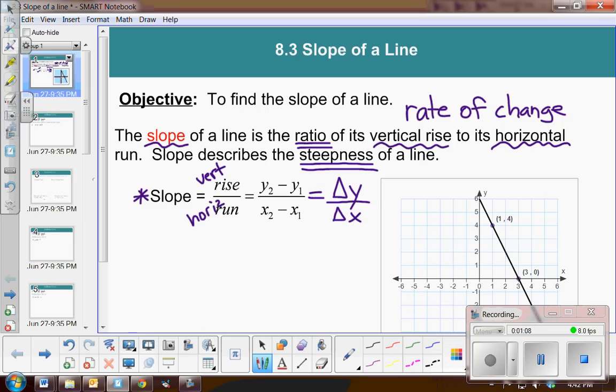So for this problem, we're given two values: 1, 4. So let's call that my first ordered pair. And 3, 0. That's my second ordered pair.